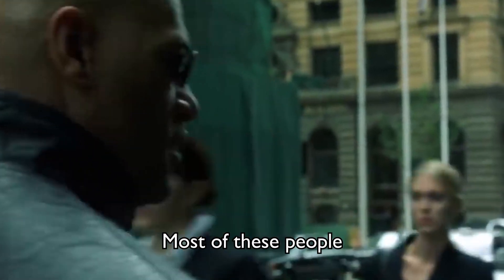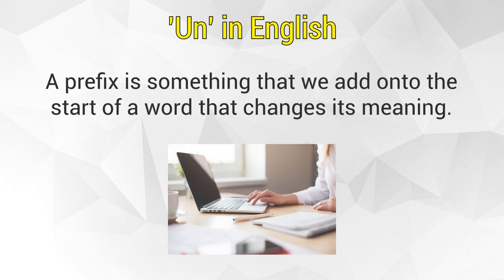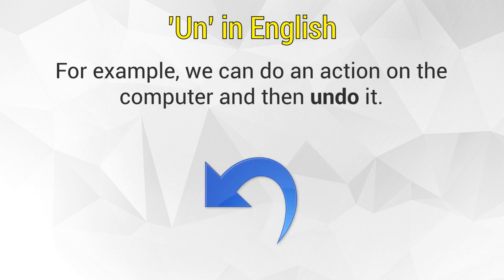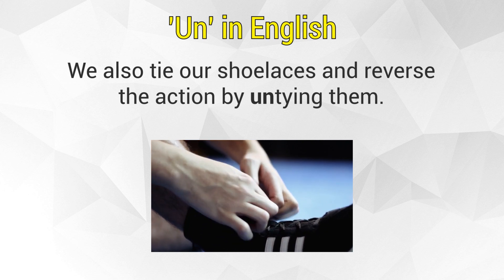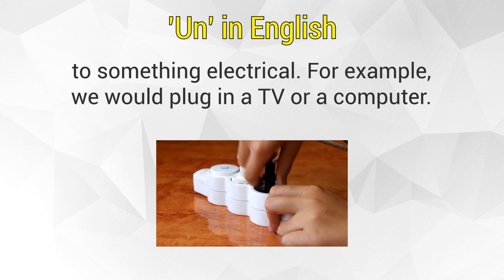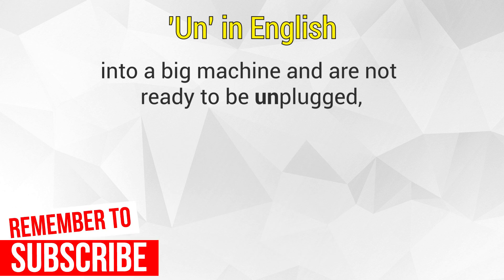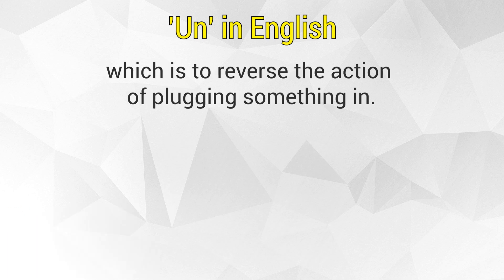You have to understand, most of these people are not ready to be unplugged. 'Un-' is a common prefix used in English which means to reverse something. A prefix is something we add onto the start of a word that changes its meaning. For example, we can 'do' an action on the computer and then 'undo' it, or we can 'tie' our shoelaces and reverse the action by 'untying' them. In this example, the verb 'plug' is used — usually referring to something electrical. As the Matrix is a computer simulation, Morpheus is saying the people are plugged into a big machine and not ready to be unplugged, which is to reverse the action of plugging something in.